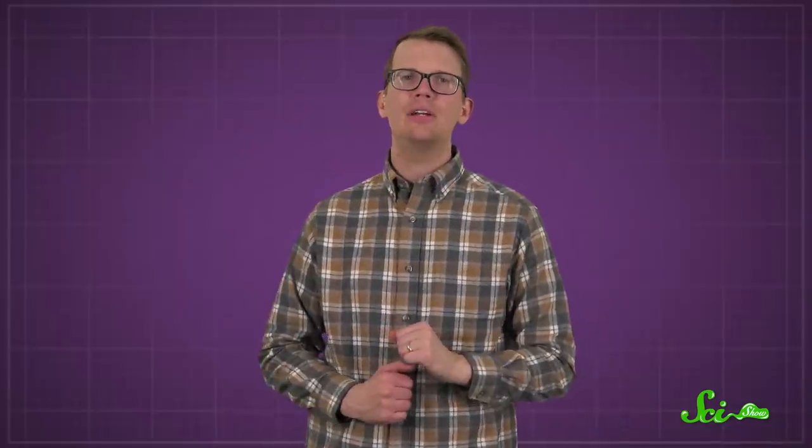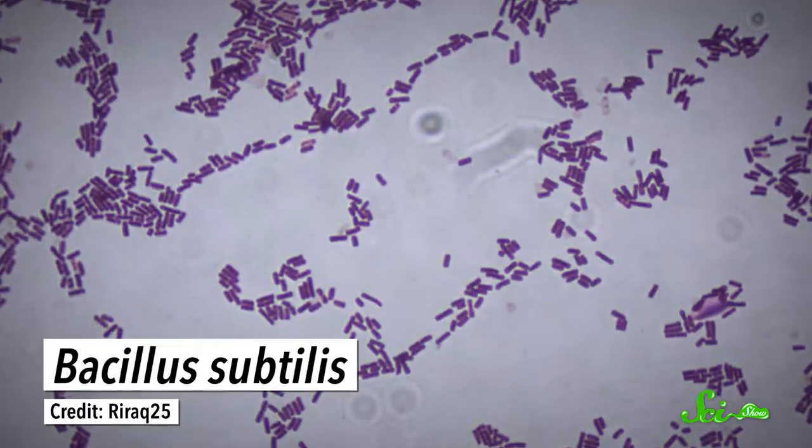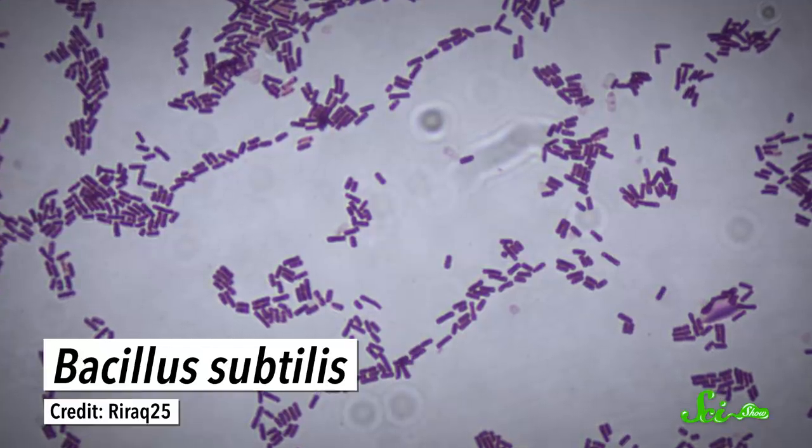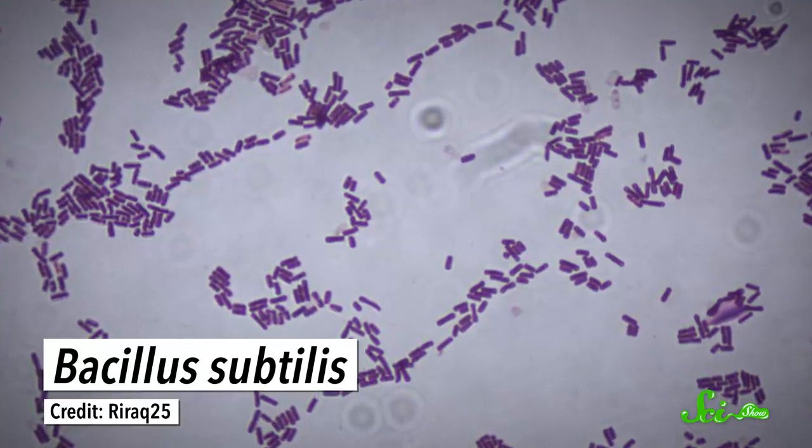And a bit of scientific digging soon revealed why this works. Bacteria. Specifically, camel dung contains Bacillus subtilis, a bacteria first identified on hay in 1835, though it's now considered a soil microbe.